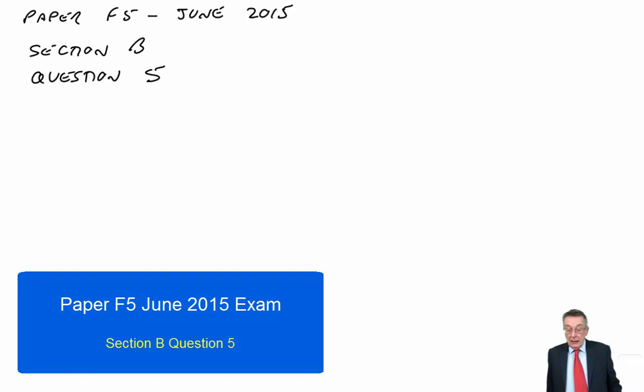Okay, June 2015, the Paper F5 exam. We've been working through Section B and now it's the last question, question five. Let's go to the requirements. Part A: describe the main steps involved in preparing a zero-based budget. Three marks.